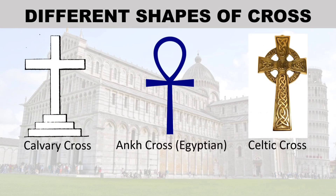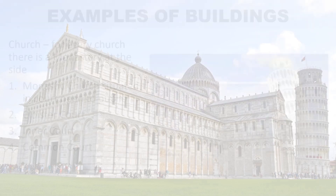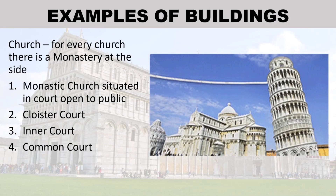Different shapes of cross: Latin cross or Crux Emissa, Cross of Lorraine, Papal Cross, Calvary Cross, Ankh Cross, Egyptian Cross, and Celtic Cross. Examples of buildings: for every church there is a monastery at the side.